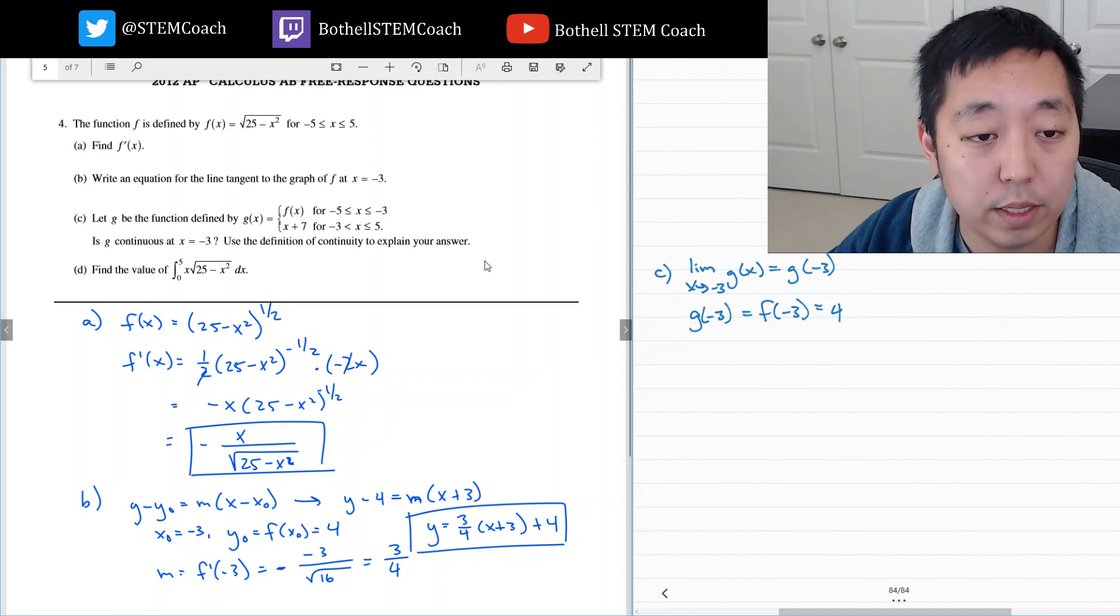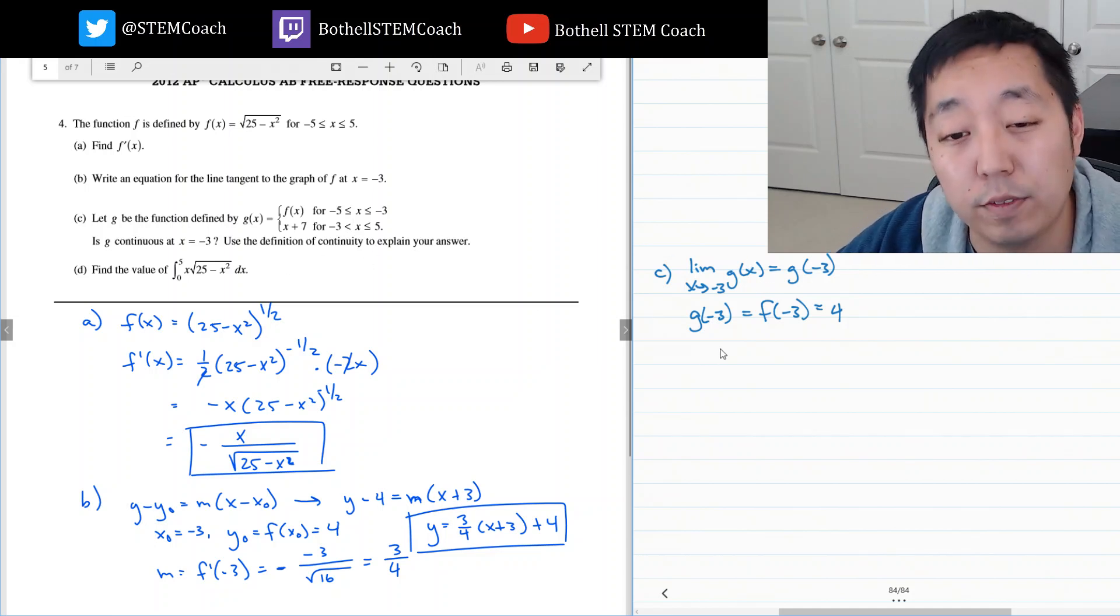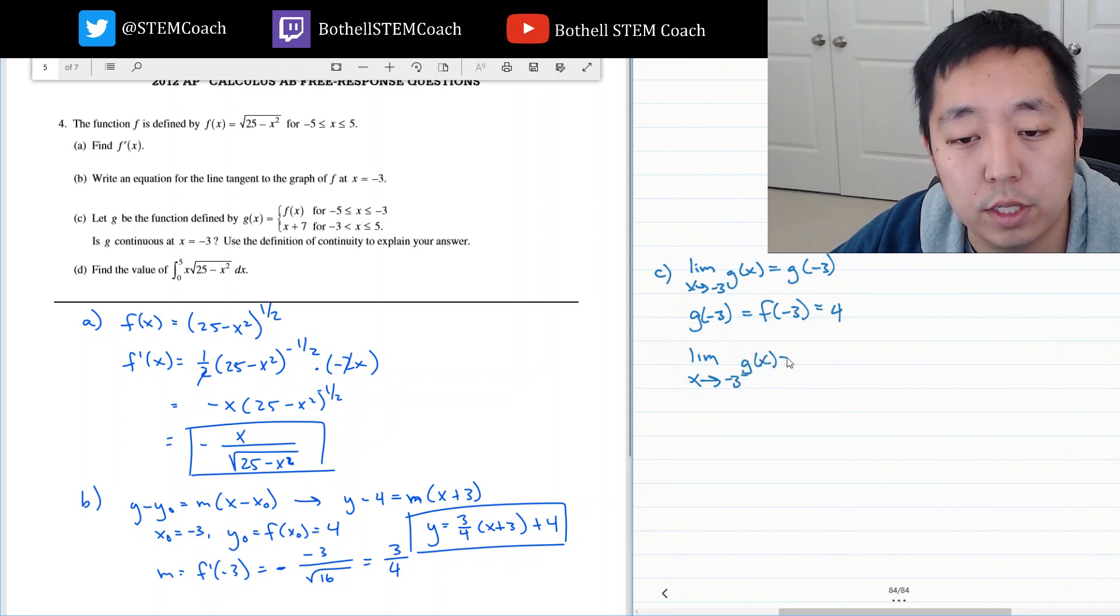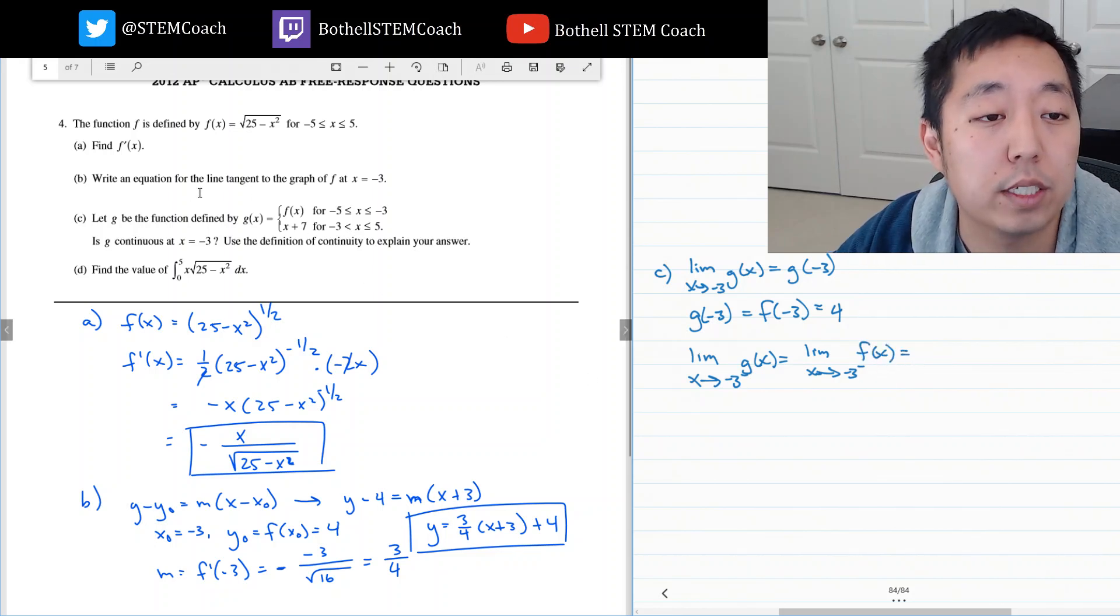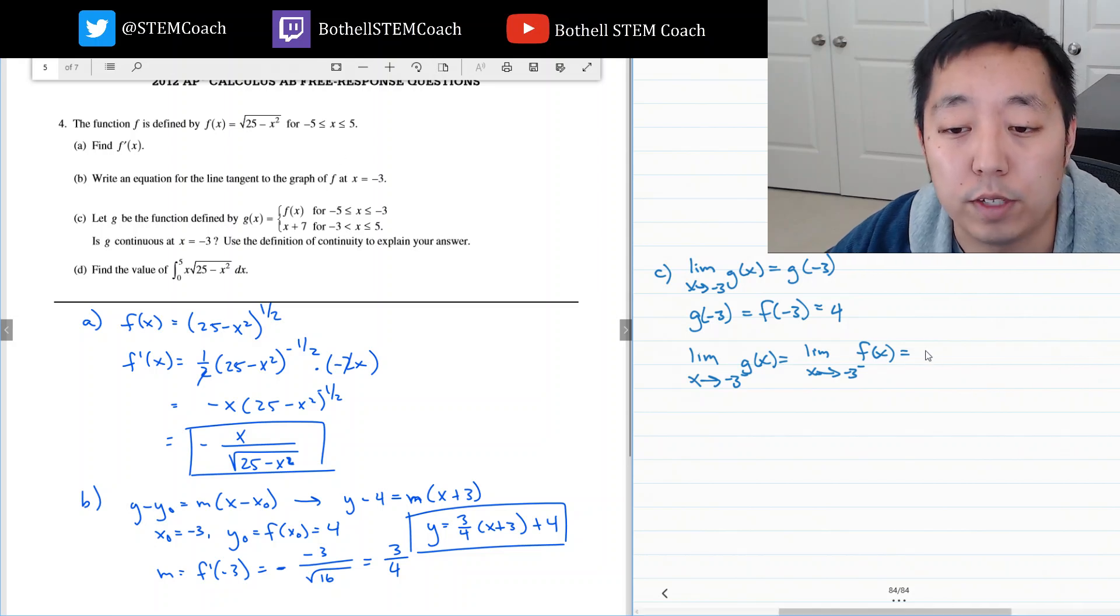Now the limit as x approaches negative 3, I got to look at the left and the right. Negative 3 from the left of g of x. Coming from the left, I'm looking at only f of x the whole time. So it's the same as x approaching negative 3 from the left of f of x. When x, so from the left, I can just plug that in and that definitely equals 4. Plug in negative 3 there.